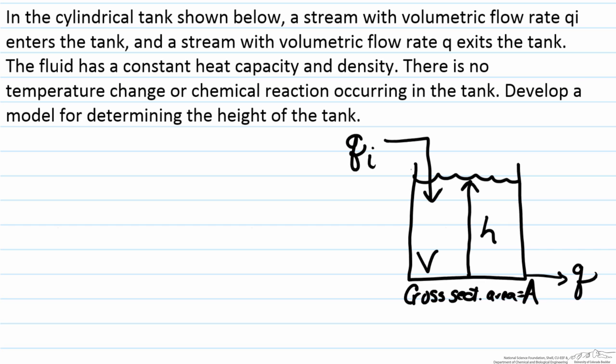The objective of this screencast is to develop a mathematical model for a chemical process. For the case that we have here, the information provided on the screen, we have a cylindrical tank with cross-sectional area A, where a fluid with constant density and constant heat capacity is entering and exiting a tank at the volumetric flow rates of qi and q respectively.